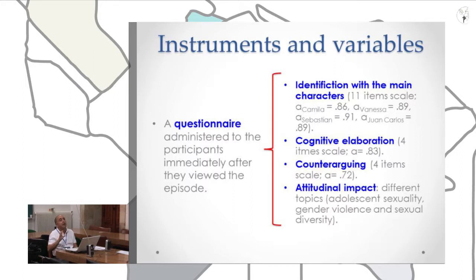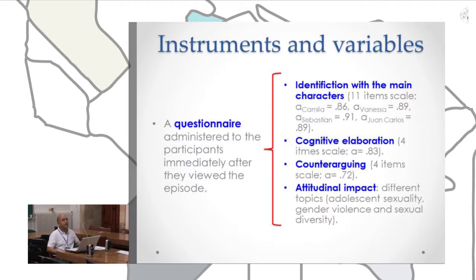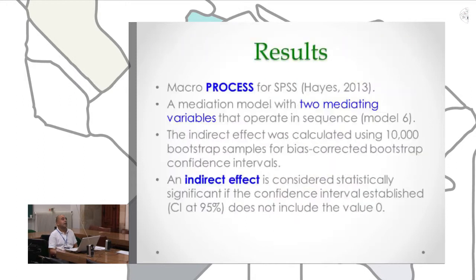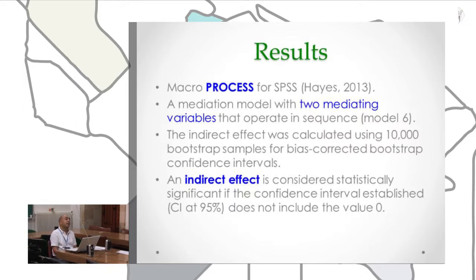The questionnaire was administered immediately after subjects viewed each episode and contained several scales: to measure identification with the four characters; to measure cognitive elaboration — the degree of reflection during processing of the narrative; to measure counter-arguing — resistance or critical approach to the message; and finally, several items to evaluate attitudinal outcomes. We used a specific macro developed by Hayes for the statistical program SPSS. This macro is called PROCESS.